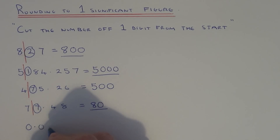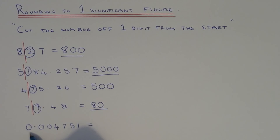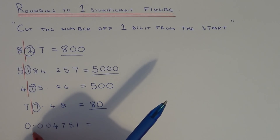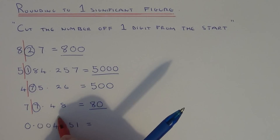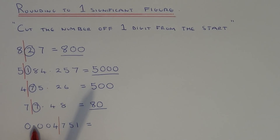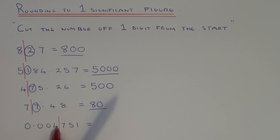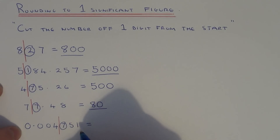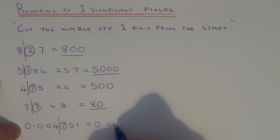Let's do one last example — this time we've got 0.004751. This time we have a number between 0 and 1, and with these you need to be careful. Your first significant figure wouldn't be here — it's going to be the 4. It's the first number from the start, but if you have 0's at the beginning, you don't count these. So the first significant figure is the 4. We're either going to leave it as 0.004 or round it up to 0.005. The number after the line is a 7, so that means we need to round it up because it's 5 or above. So our answer will be 0.005.